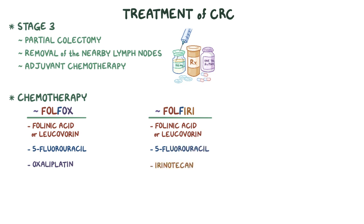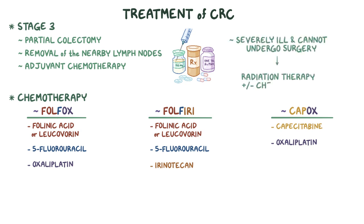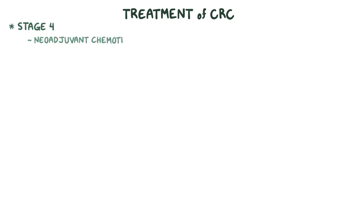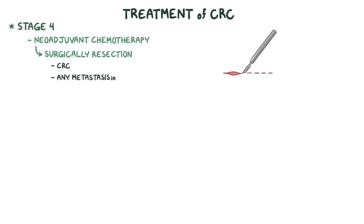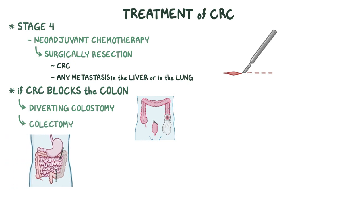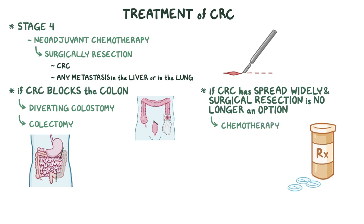One additional regimen is called Capox, formed by capecitabine and oxaliplatin. In individuals that are severely ill and cannot undergo surgery, radiation therapy with or without chemotherapy may be an option. For CRC stage 4, neoadjuvant chemotherapy may be done to shrink the tumors before surgically resecting the CRC along with any metastasis in the liver or lung. If the CRC blocks the colon, then a diverting colostomy or a colectomy may be needed. If CRC has spread widely and surgical resection is no longer an option, then chemotherapy is the main treatment.